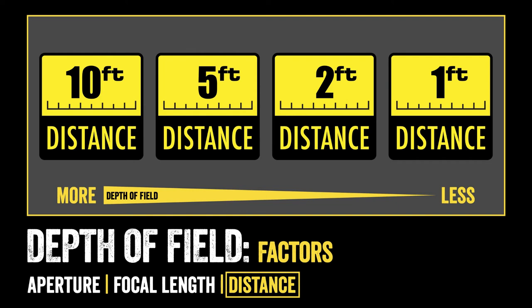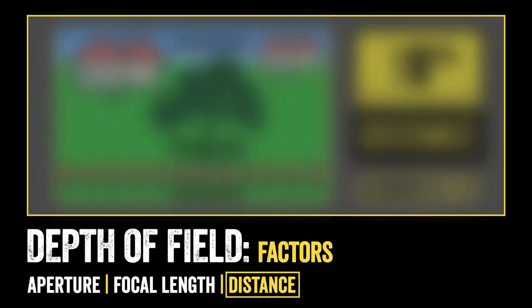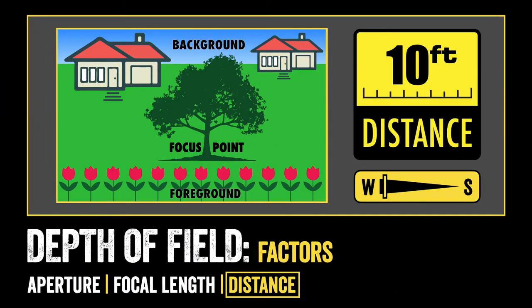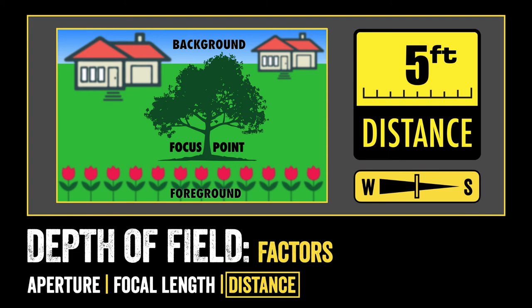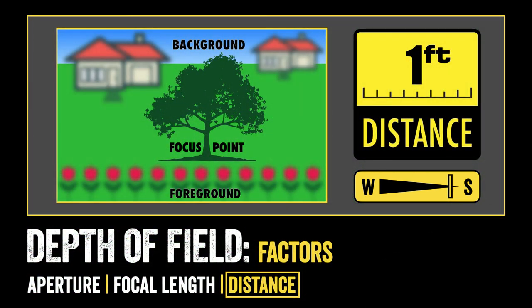So like our other two factors, let's visualize distance. Our focus point is again the tree. If I'm at a 10-foot distance and I focus on the tree, my foreground flowers are going to be in focus, the houses in the background will be in focus, and I will have a wide depth of field. Now as I decrease that distance and move closer to the focus point — moving from 10 feet to 5 feet — I start to get a more shallow depth of field. My foreground slightly blurs, my background slightly blurs. And as I get even closer, I'll get a much shallower depth of field.